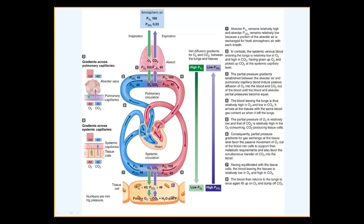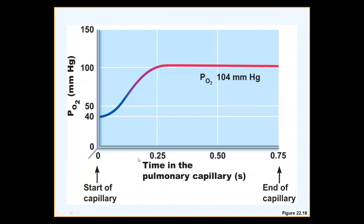How long does this exchange take? In less than a quarter of a second the exchange happens. At the start of the capillary the blood has PO2 of approximately 40 mmHg, and within a quarter second it is already loaded. The blood doesn't exit the capillary until about 0.7 seconds, so if the exchange is incomplete for any reason, there is more time for additional exposure between the gases and the capillary, allowing more chances for oxygen and carbon dioxide to diffuse across the respiratory membrane.